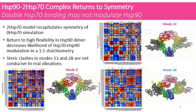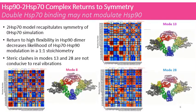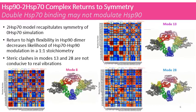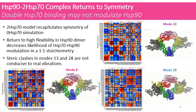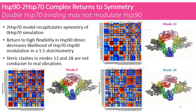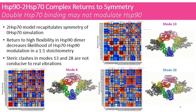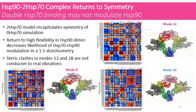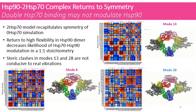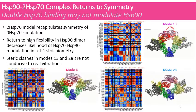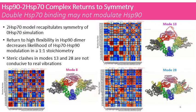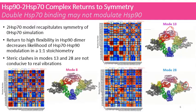In the two Hsp70 bound Hsp90 complex, we have a return to symmetry. This recapitulates the zero Hsp70 simulation. This return to high flexibility in the Hsp90 dimer decreases the likelihood of Hsp70-Hsp90 modulation. Steric clashes in mode 13 and mode 28 are not conducive to real vibrations.